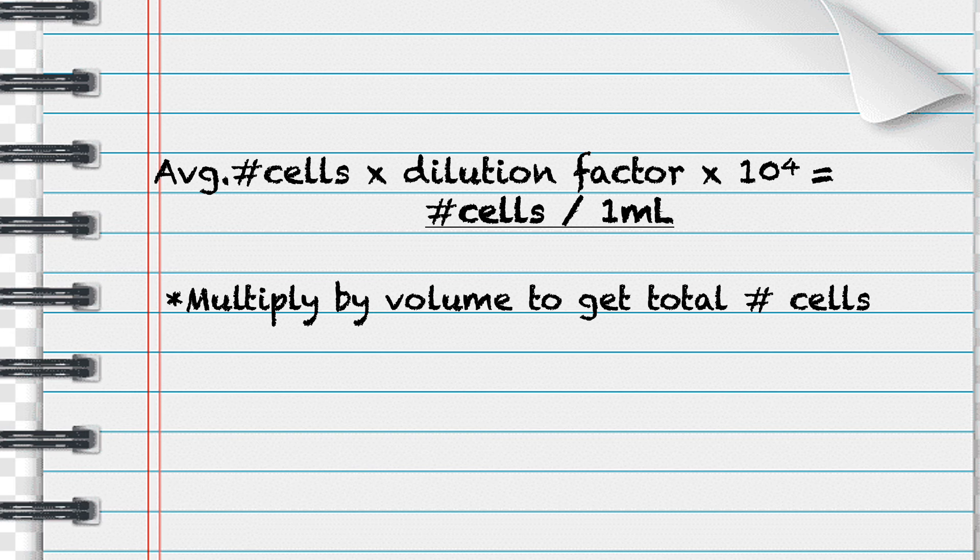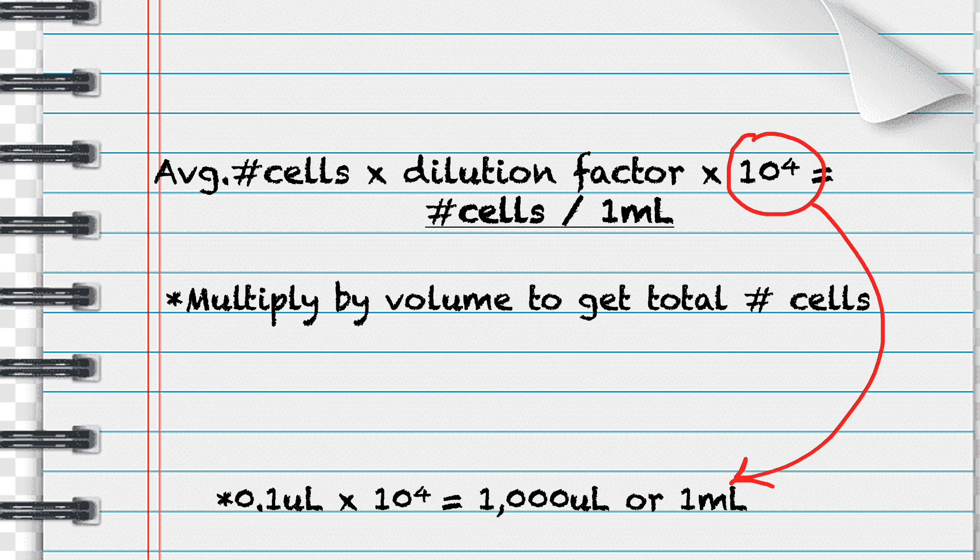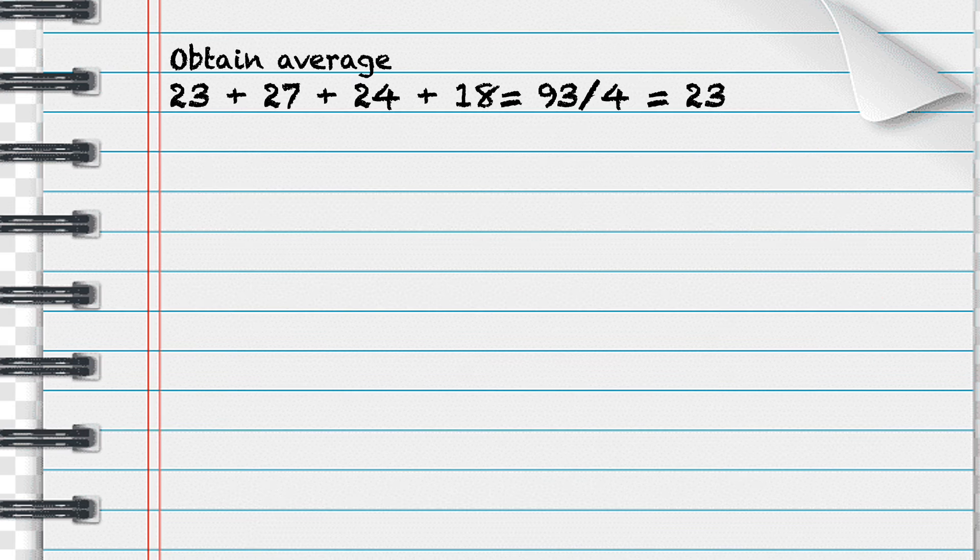This is the formula we will be using to calculate the number of cells we have. This formula calculates the number of cells per one milliliter. This means that we have to multiply by the number of mLs in order to calculate the total number of cells. You may be wondering why we multiply by 10 to the fourth. This is because each of the large squares holds 0.1 microliters, and we are trying to calculate the number of cells in 1 mL or 1,000 microliters. So we multiply by 10,000.